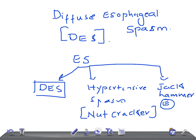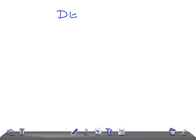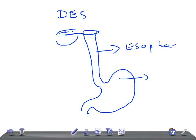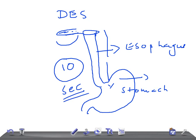Now let's move on to the most important topic — DES, Diffuse Esophageal Spasm. The esophagus connects the oral cavity to the stomach. The bolus travels from the oral cavity to the stomach in less than 10 seconds. The esophagus has inner circular muscles and outer longitudinal muscles.